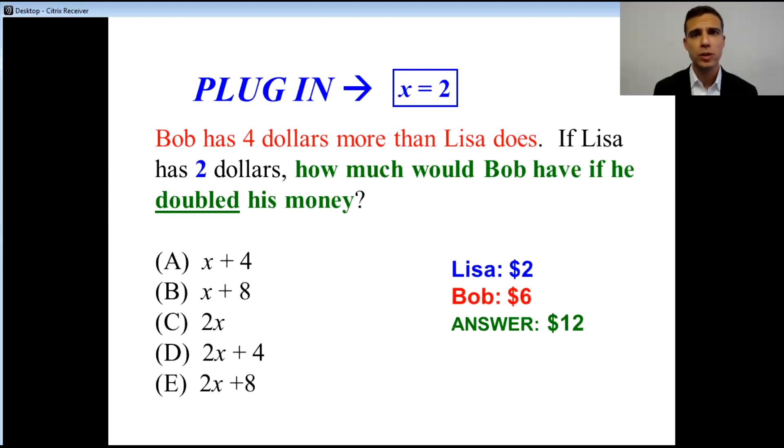If Bob has $12, all we need to do now is use X equals 2, which we made up on our own, put that into the answer choices and see which one works out to be 12.